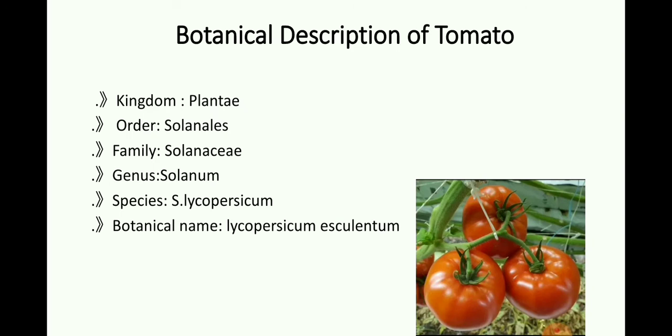Botanical description of tomato: Tomato belongs to the kingdom Plantae, its order is Solanales, family is Solanaceae, genus Solanum, species is S. lycopersicum, and its botanical name is Lycopersicum esculentum.